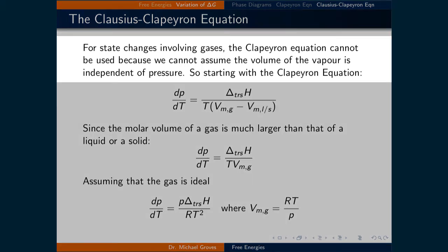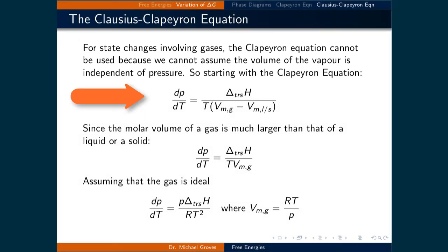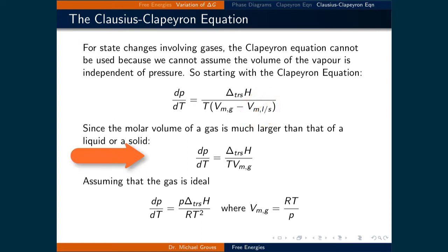For state changes involving phases with molar volumes that can greatly vary, such as for gases, the Clapeyron equation cannot be used because we cannot assume the volume of the vapor is independent of pressure. Starting with the Clapeyron equation, where we write out explicitly the change in molar volume of the transition, dp/dT equals the change in enthalpy of the transition divided by the temperature times the molar volume of the gas minus the molar volume of the other phase, being solid or liquid. Since the molar volume of the gas is much larger than that of the other phase, we can neglect the molar volume of the other phase, leaving dp/dT equal to the change in enthalpy of the transition divided by the temperature times the molar volume of the gas.